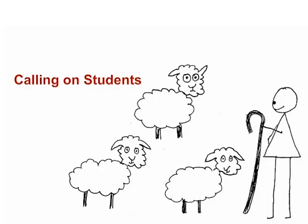Calling on students to draw them back into the lesson is yet another positive way to correct student behavior. Let's see another example of this indicator in action.